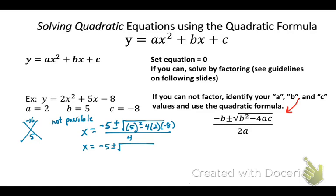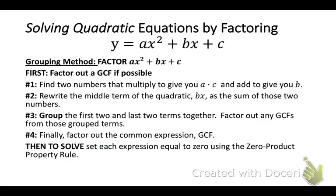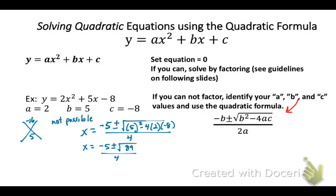I always simplify what's under the square root first. It's 89 and there's no perfect square in there. So our final answer is negative 5 plus and minus the square root of 89, all over 4.